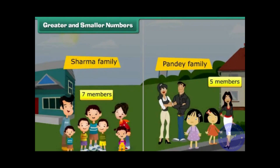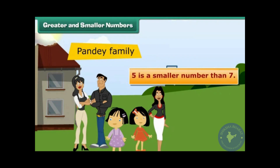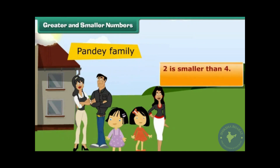Let us now look at these cases from the other side. Pandey family has fewer members, which means five is a smaller number than seven. Therefore, numbers that come before are smaller than the numbers that come later. Two is smaller than four. Ten is smaller than fifteen.